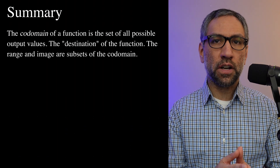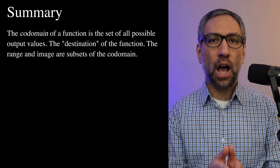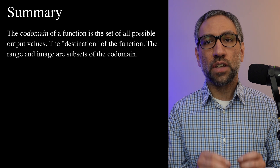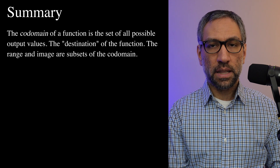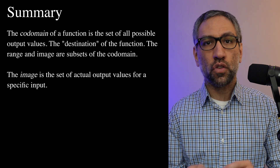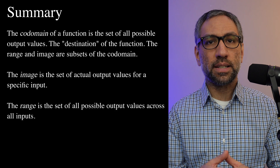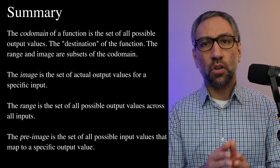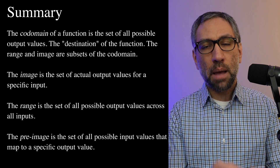To summarize: the codomain of a function is the set of all possible output values — the destination of the function. The range and image are subsets of the codomain. The image is the set of actual output values for specific inputs. The range is the set of all possible output values across all inputs. And the pre-image is the set of all possible input values that map to a specific output value. I hope you found this video informative and helpful. If you liked it, don't forget to subscribe to the channel for more videos like this.